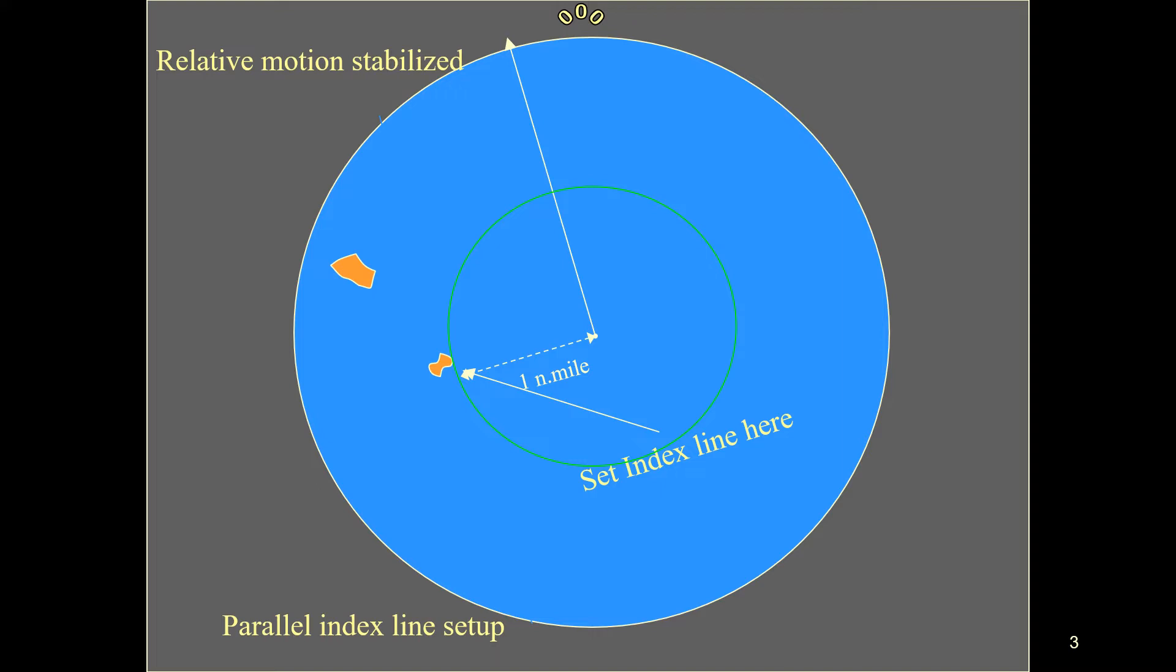A line drawn from the echo of the fixed object tangential to the variable range marker circle set to the desired passing distance will indicate the forecast track of the echo as own ship proceeds.